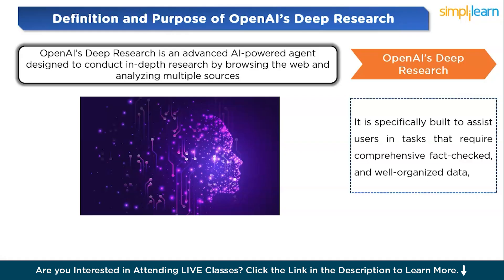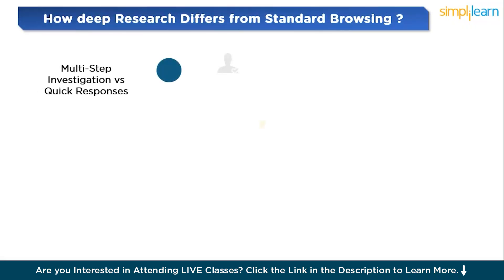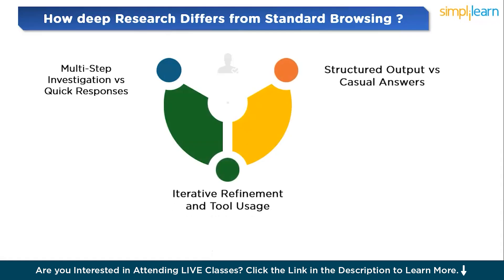You would be wondering how Deep Research differs from standard ChatGPT browsing. Deep Research is designed for comprehensive, multi-step investigations, whereas ChatGPT browsing provides quick, often brief responses to user queries. Deep Research takes time to browse multiple sources, gather data, analyze iteratively, and produce well-organized, structured reports.